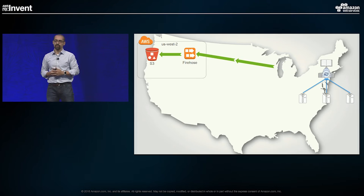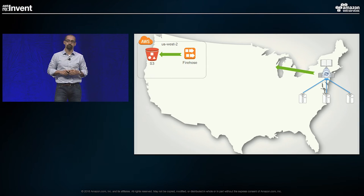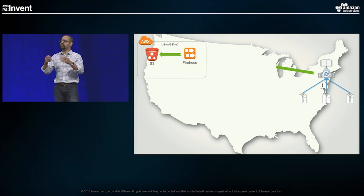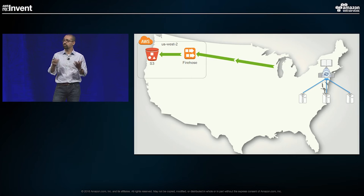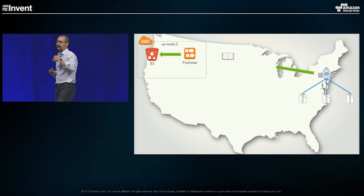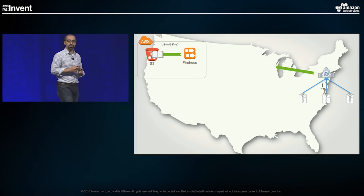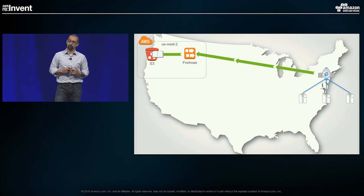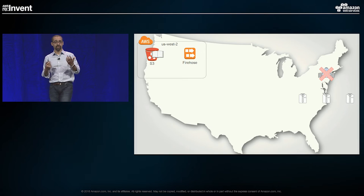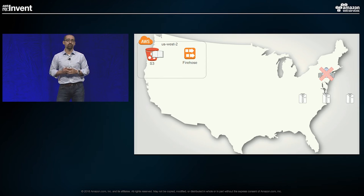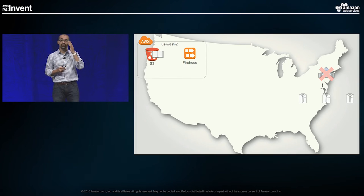On a regular Monday, AEX is up and running. Broker dealers are connecting into our customer gateways and sending in orders. Our matching engines receive those orders and match them. As the book changes, we replicate it to that S3 bucket over in US West 2 using Kinesis Firehose. If we encounter a disaster — both prod and backup going down — connectivity from broker dealers will drop, matching engines will stop receiving and matching orders, and replication will stop.